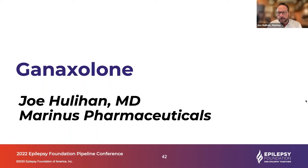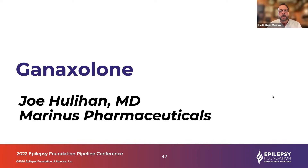Talking about ganaxolone — as most everybody knows, it's a neuroactive steroid, an allopregnanolone analog active at GABA-A receptors, as some of the other compounds we've heard about. It's a positive allosteric modulator of synaptic and extrasynaptic GABA-A receptors.